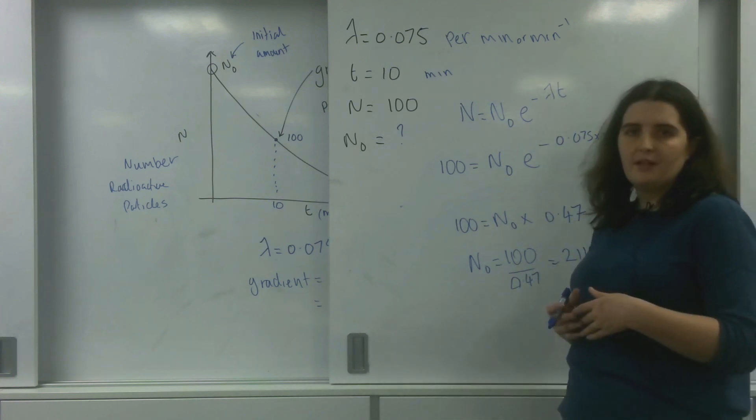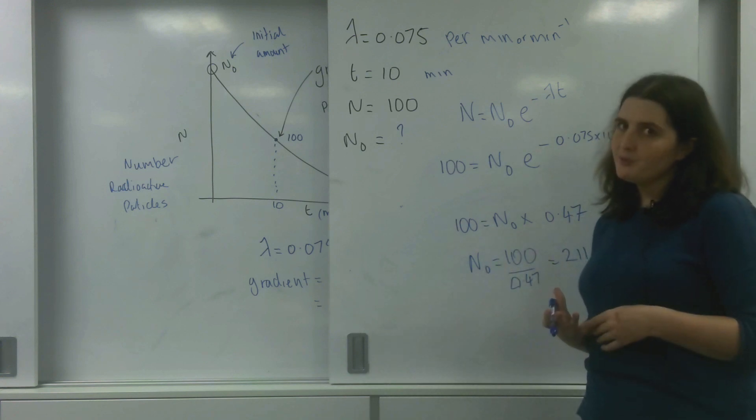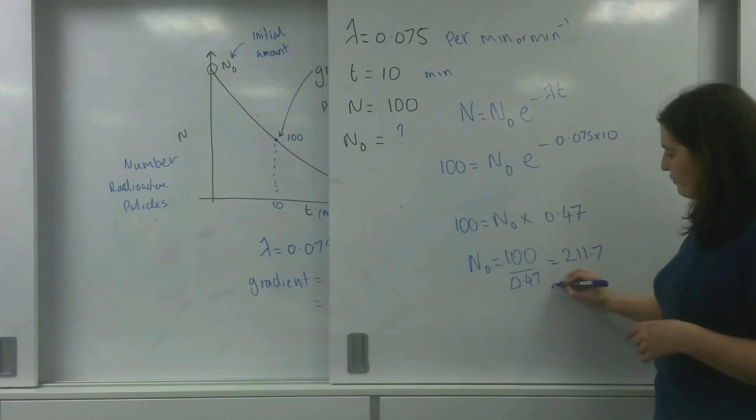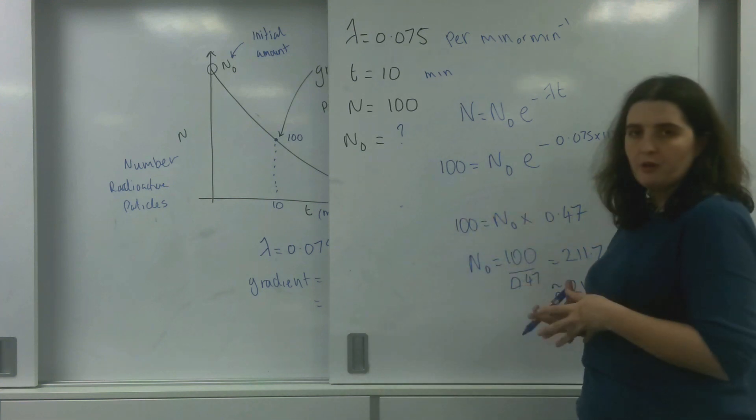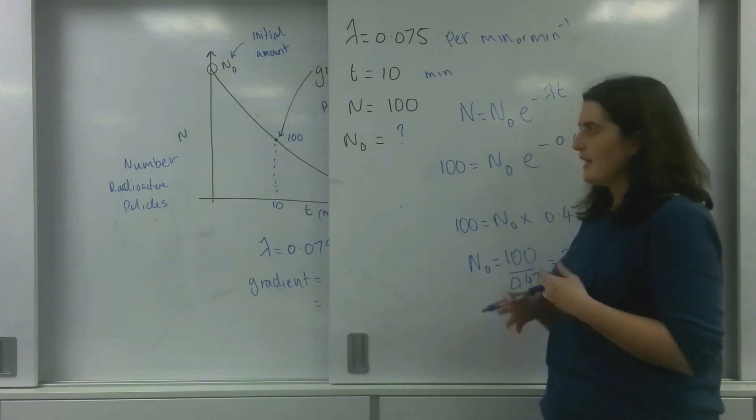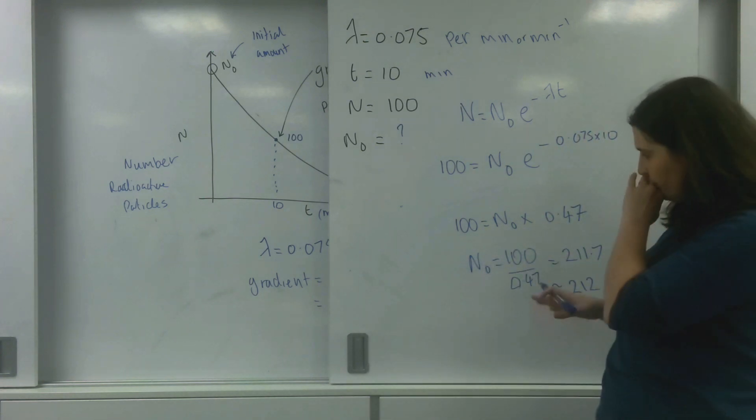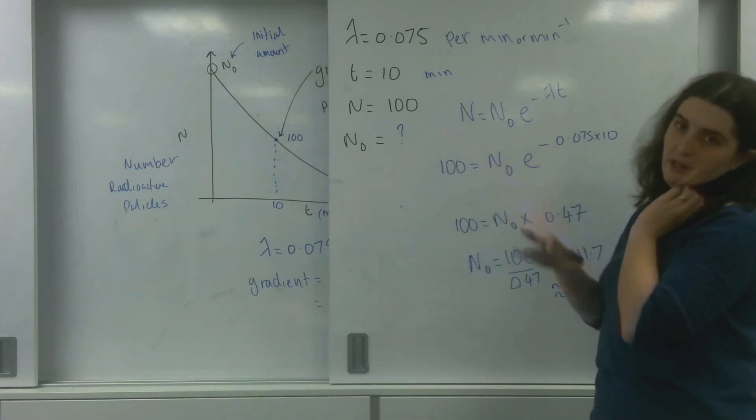You can only have a whole amount of particles there, so I would round that to 212. So you'd have about 212 particles initially, and at this point in time after 10 minutes you have 100 left.